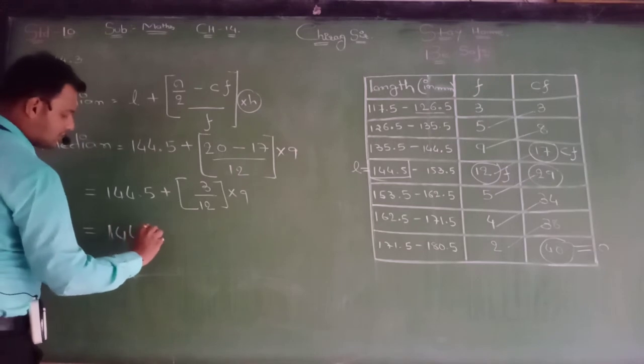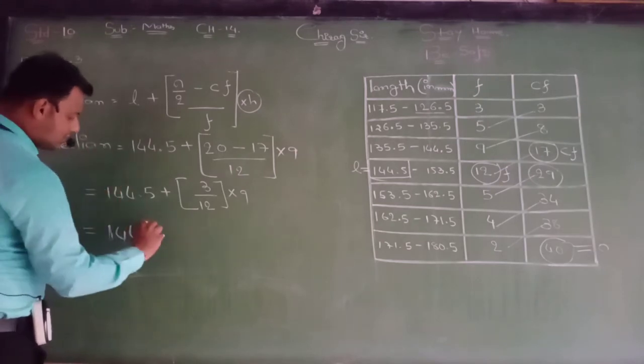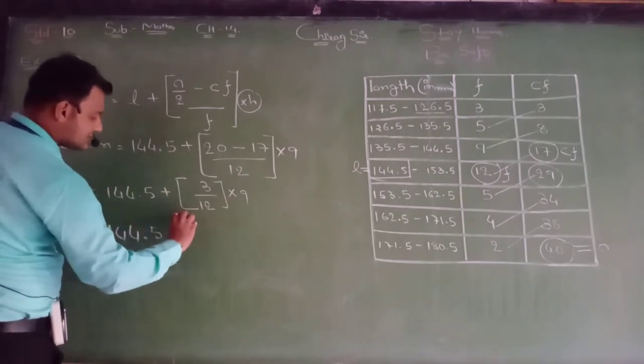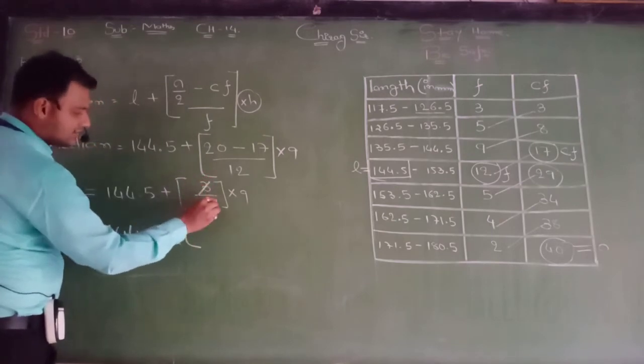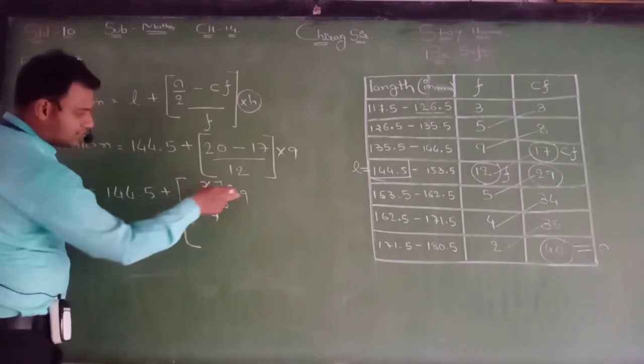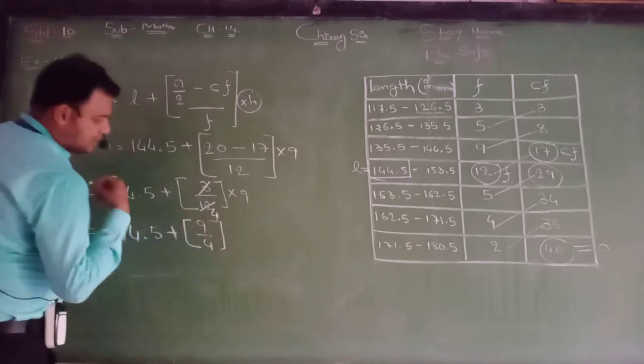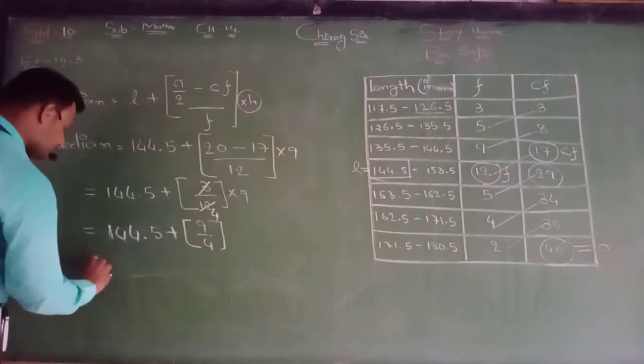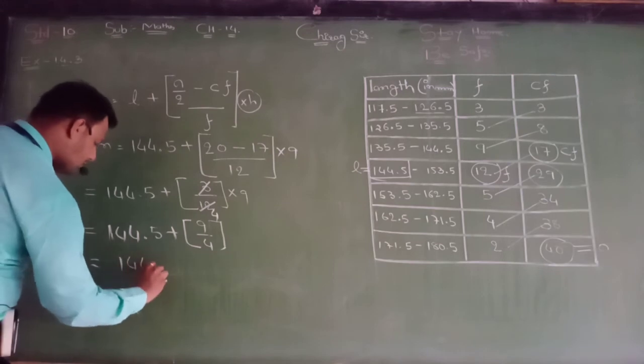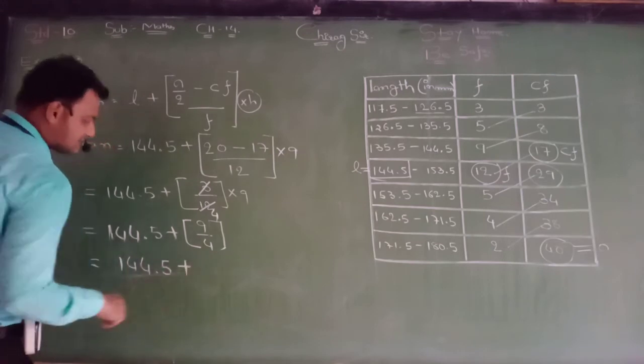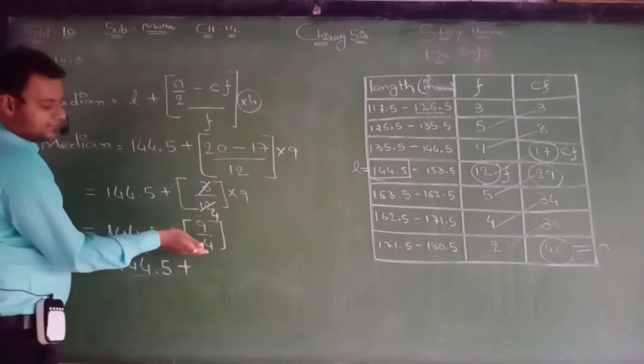144.5 plus, please see here, this is 3, this is 12, means it is 4. In short, 9 by 4. 144.5 plus, it is very simple.